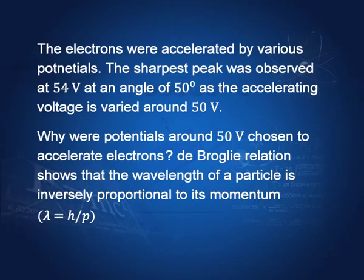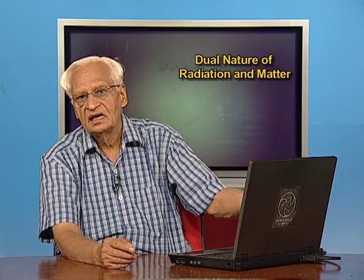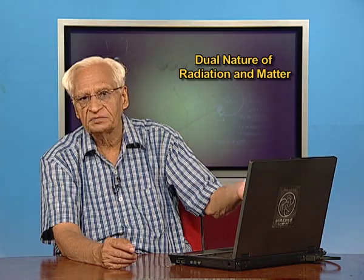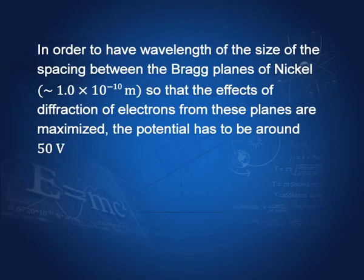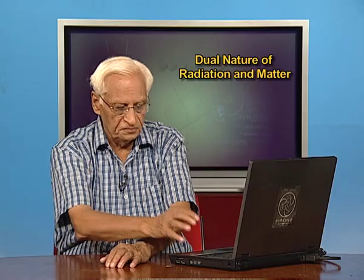The de Broglie relation shows that the wavelength of a particle is inversely proportional to its momentum, that is lambda equal to h by p. In order to have a wavelength of the size of the spacing between the Bragg planes of nickel so that effects of diffraction of electrons from these planes are maximized, the potential has to be around 50 volts.